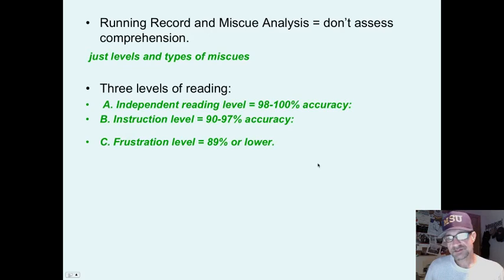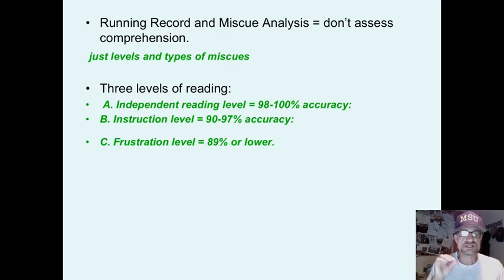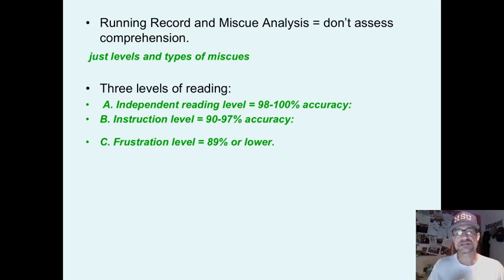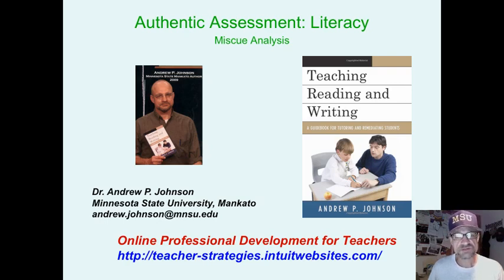This hopefully gives you an overview, though I doubt I've given you a very good explanation. Running record and miscue analysis don't do anything for comprehension — they are just giving you a sense of the levels and types of miscues, and they give you a sense of the reading level. Running record is best for quickly finding the approximate reading level; miscue analysis is for looking at the types of errors. They do not assess comprehension. That is just a quick overview on miscue analysis — hopefully you can find other resources to put that information in a meaningful context.